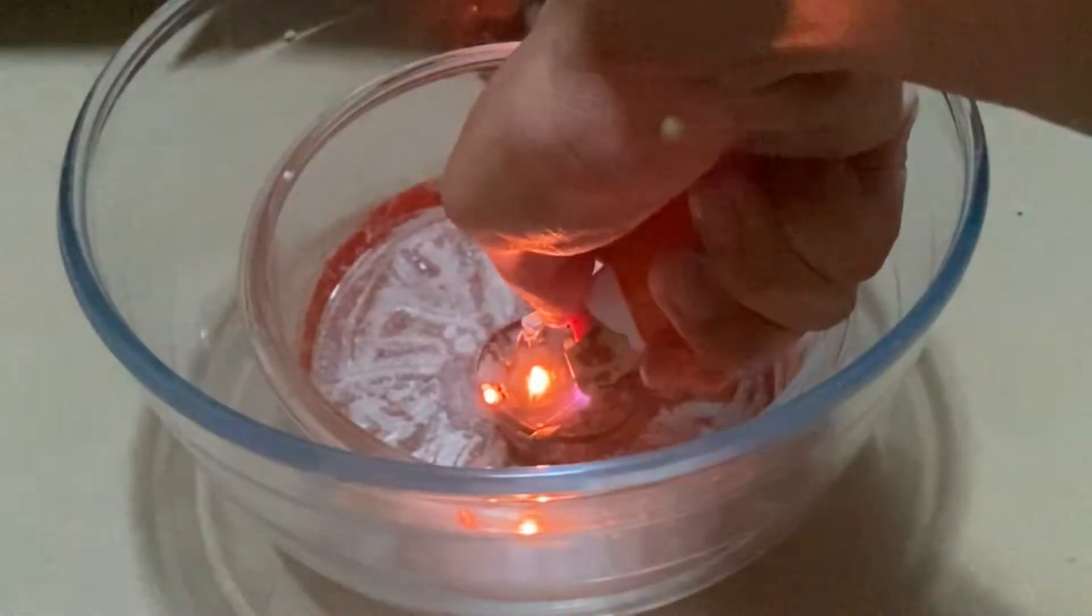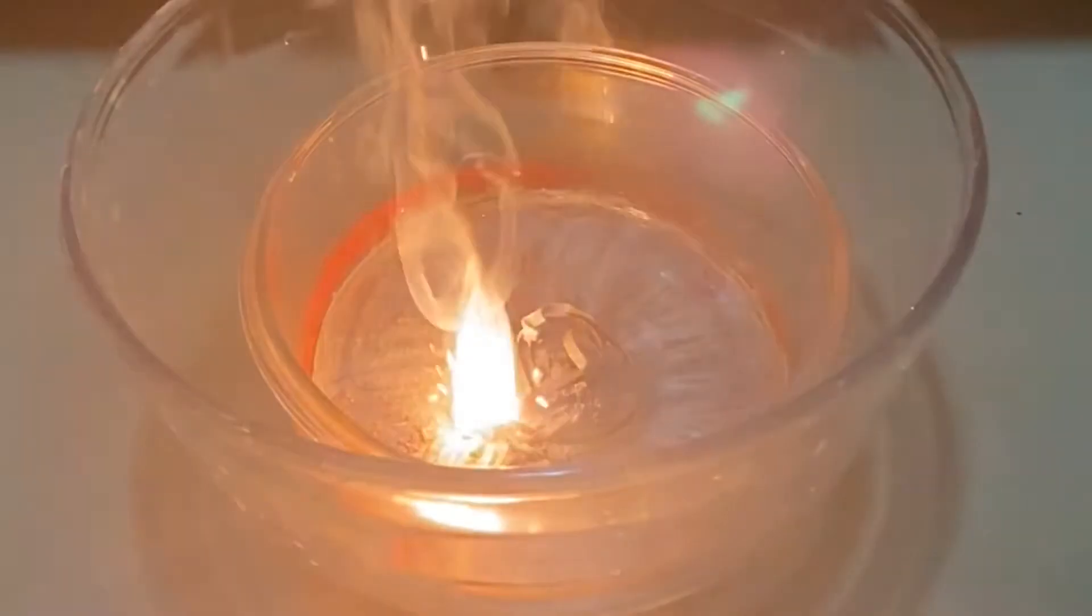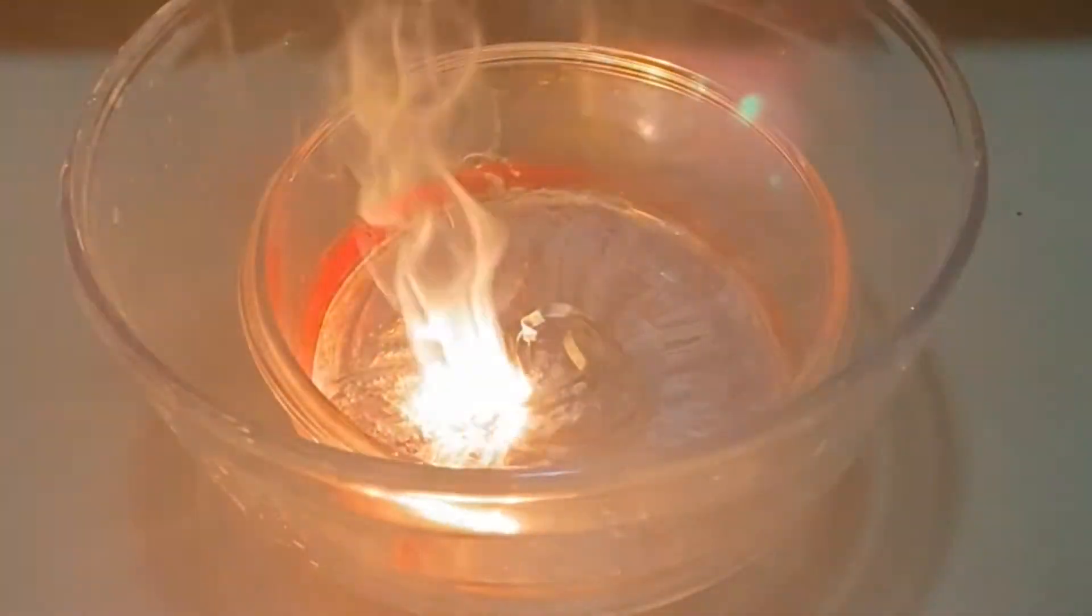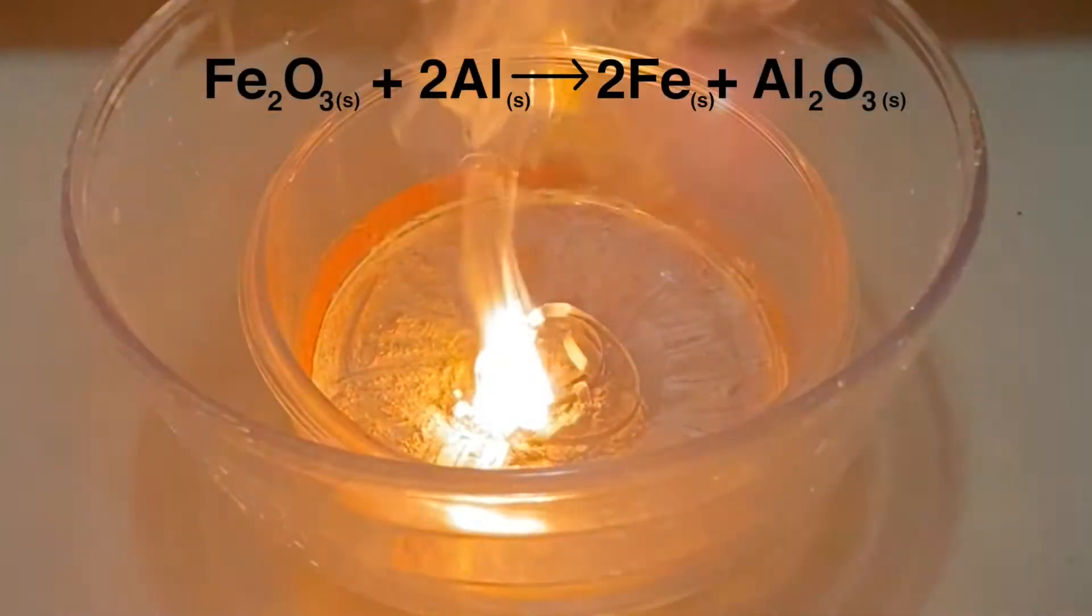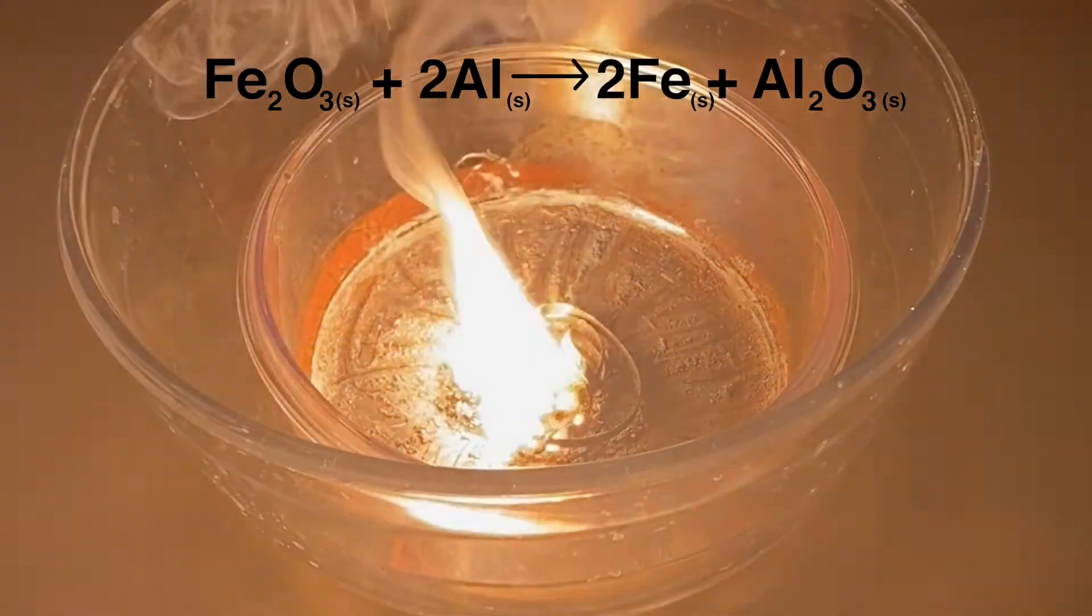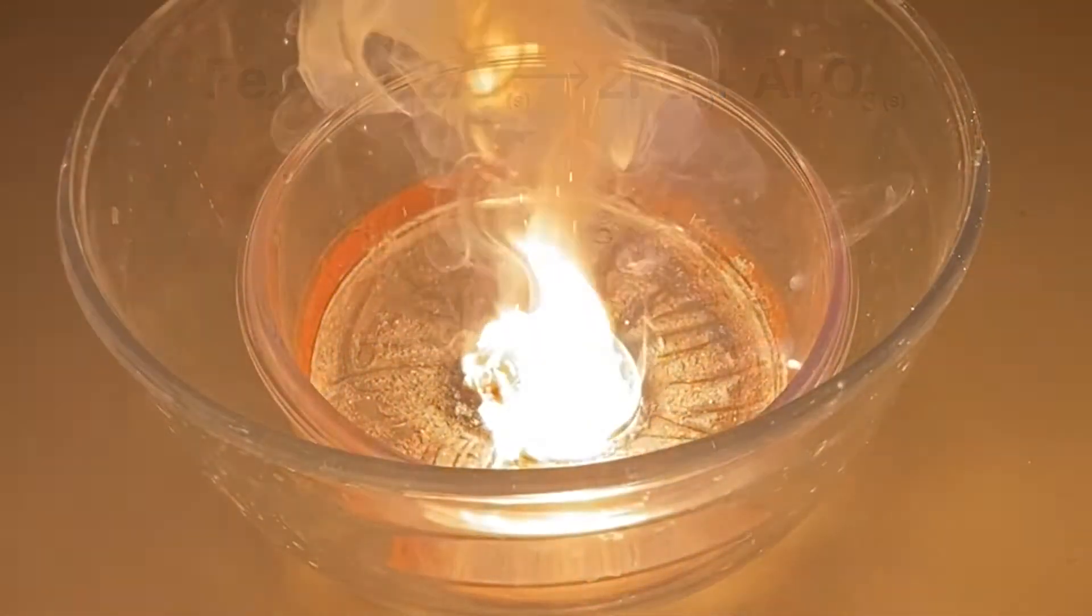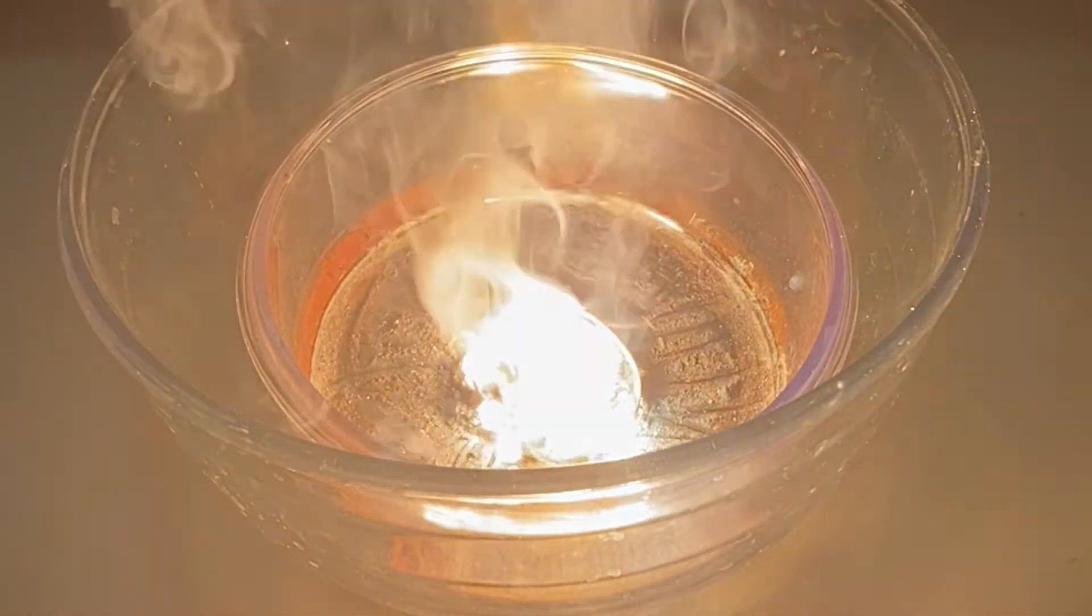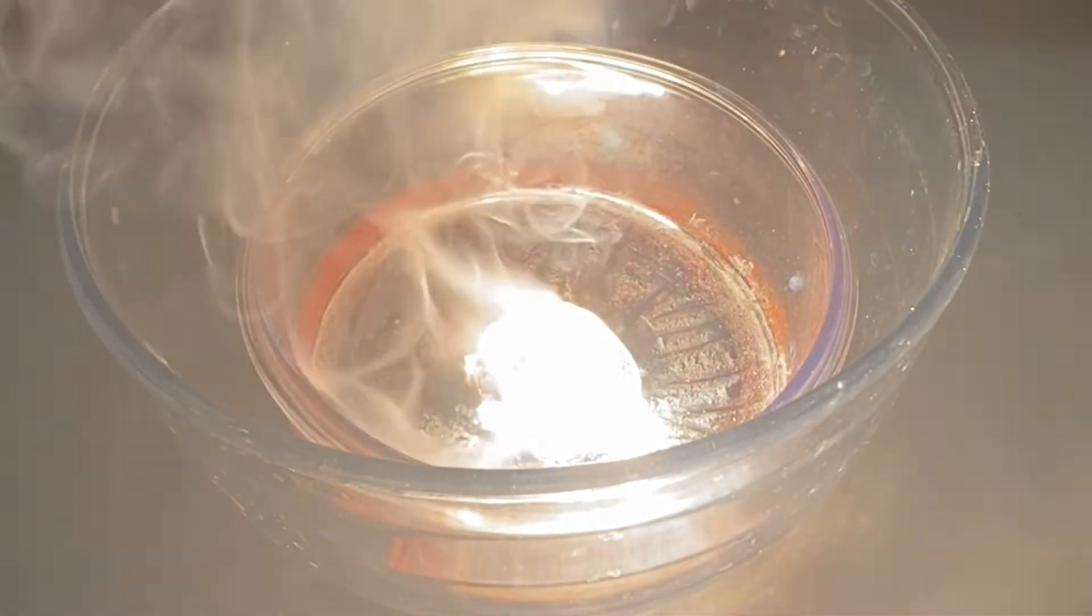When I lit up the magnesium, it provided enough energy for the displacement reaction between aluminum and iron-ferrous oxide to occur and produces metallic iron. The reaction is highly exothermic. However, since it's being done in such a small scale, it's rather tame.